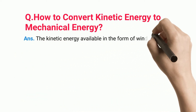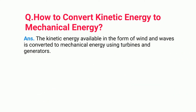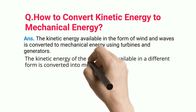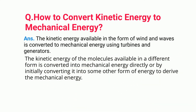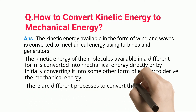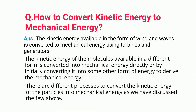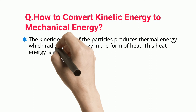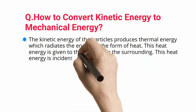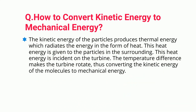How to convert kinetic energy to mechanical energy: The kinetic energy available in the form of wind and waves is converted to mechanical energy using turbines and generators. The kinetic energy of the molecules available in different forms is converted into mechanical energy directly or by initially converting it into some other form of energy. The kinetic energy of the particles produces thermal energy which radiates in the form of heat, and this heat energy is incident on the turbine; the temperature difference makes the turbine rotate, converting the kinetic energy to mechanical energy.